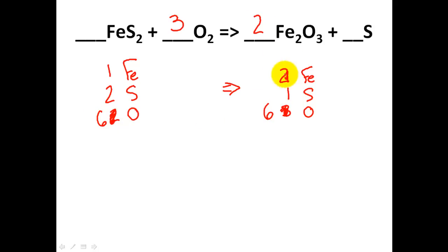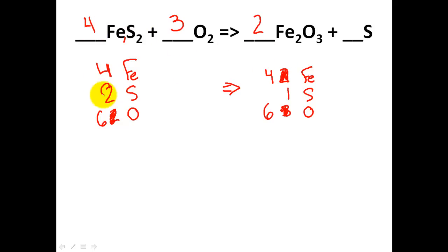Two times two gives me four Fe's, so the number of irons has been altered. I need to put four times one to give me four Fe's. By putting four in front, that's also distributed to the sulfur — four times two gives me eight sulfurs. I need eight times one is eight sulfurs. So: four, eight, and six on both sides. Love conservation of mass — we're satisfied.